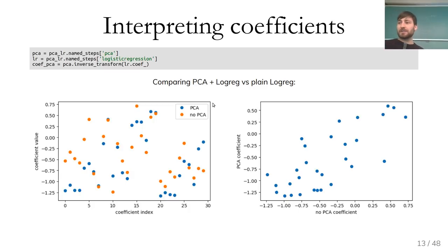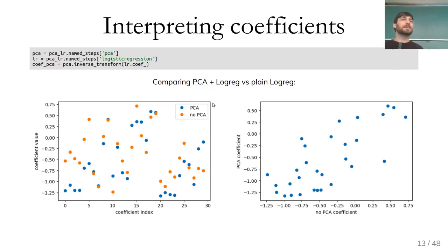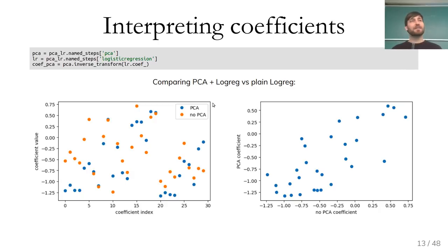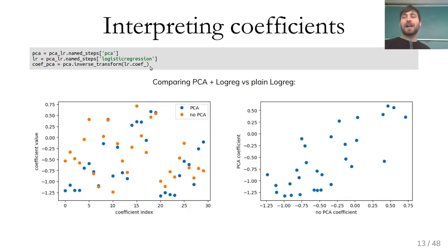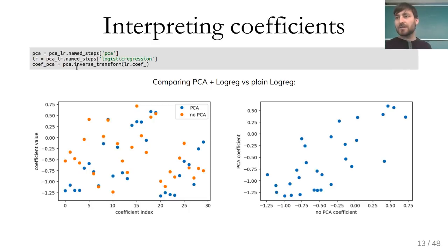Do you lose interpretability? Because PCA is just a rotation, you can invert it with inverse_transform. You get the PCA and logistic regression from the pipeline, apply inverse_transform to the LR coefficients, and this gives you coefficients in the original feature space. LR_coef has length six (six principal components); coef_PCA has the size of the original feature space, like 28 or 29. So I would say this is equally interpretable because you can project back to your initial space.